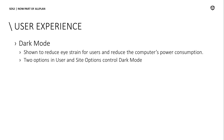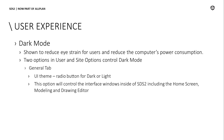We're going to start out with User Experience. First thing is dark mode. We have decided to create a dark mode. This is shown to reduce eye strain for users and also reduce the power consumption of your computer. There are two options to set dark mode. In your User and Site Options, under the General tab, you will have UI Theme — a radio button for dark or light. This option will control the interface windows: the main menu, the modeling, drawing editor window, and any of the member edit windows will be in dark mode.